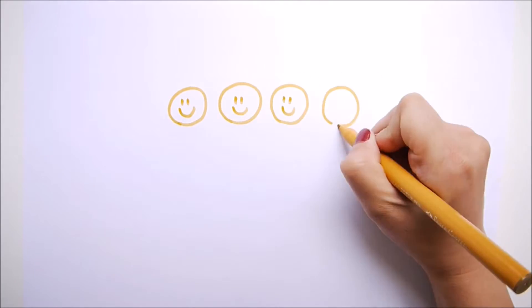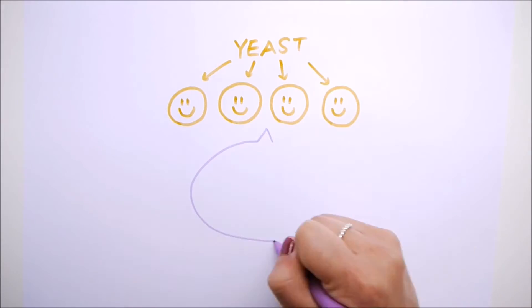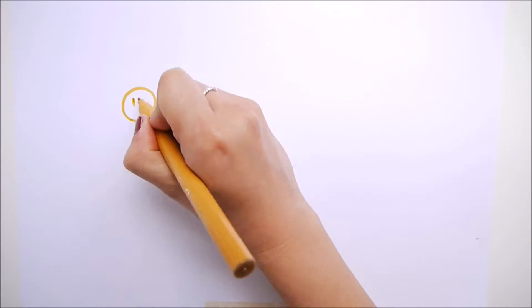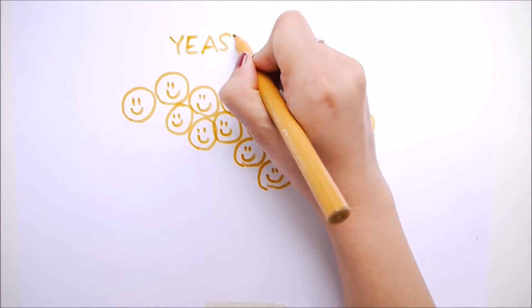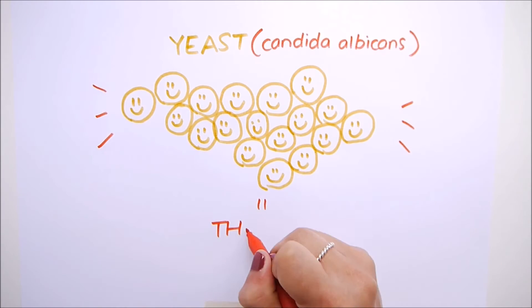Your vagina is home to lots of yeast, which is usually harmless. In fact, it helps protect our bodies. But sometimes, there will be an overgrowth of a yeast called Candida albicans. This is what causes thrush.